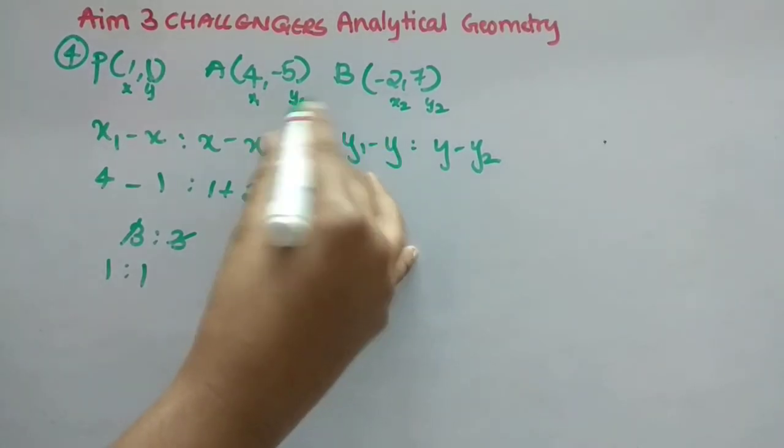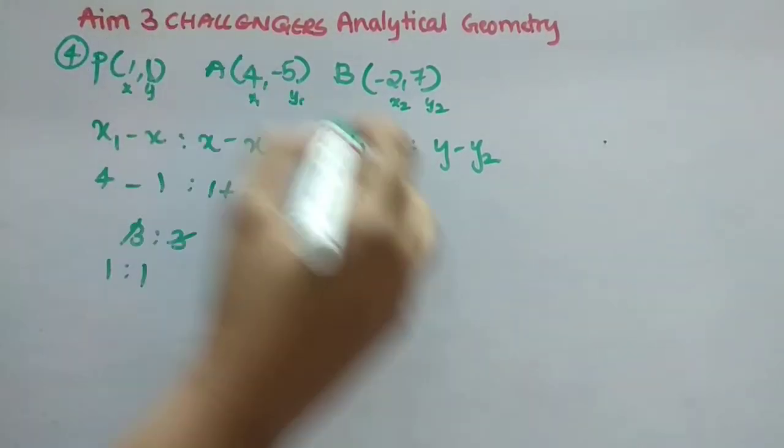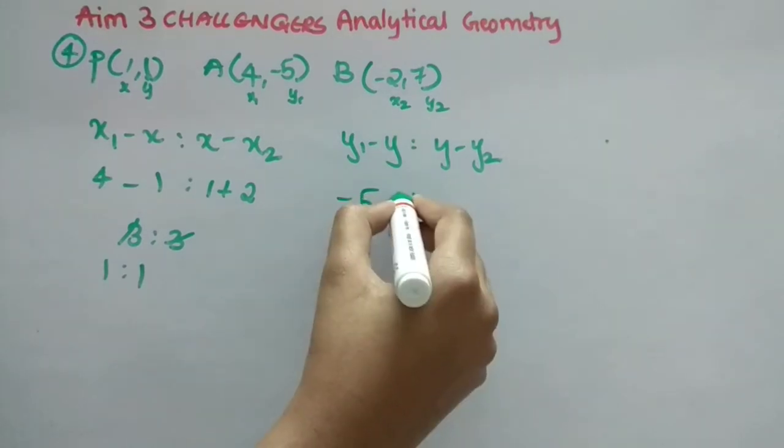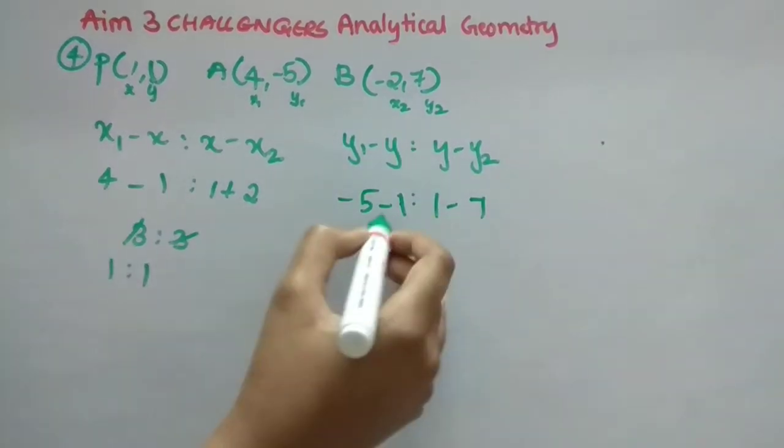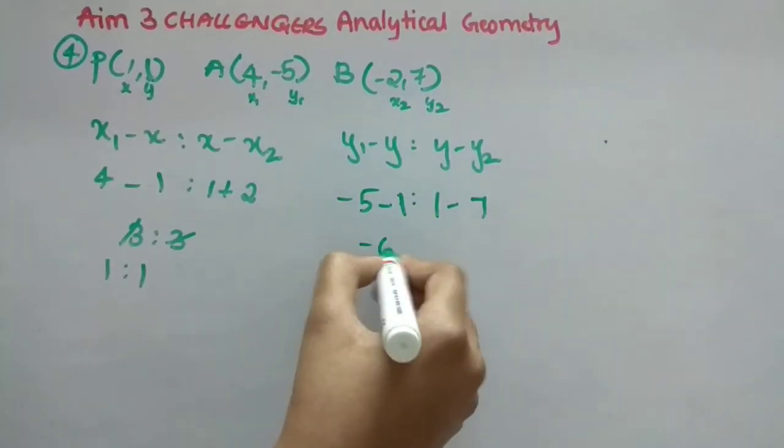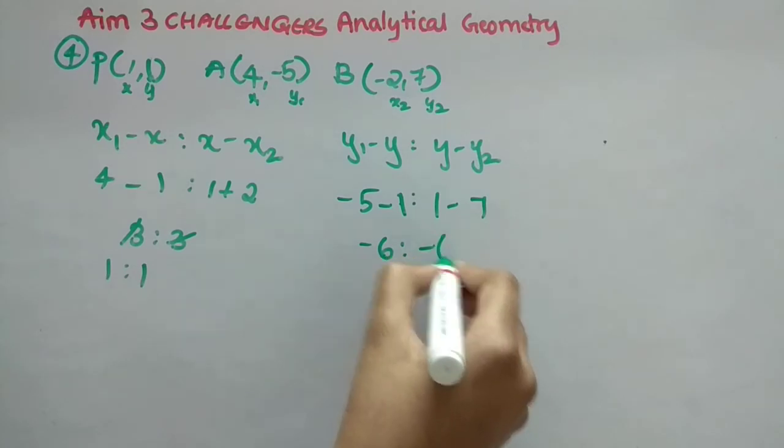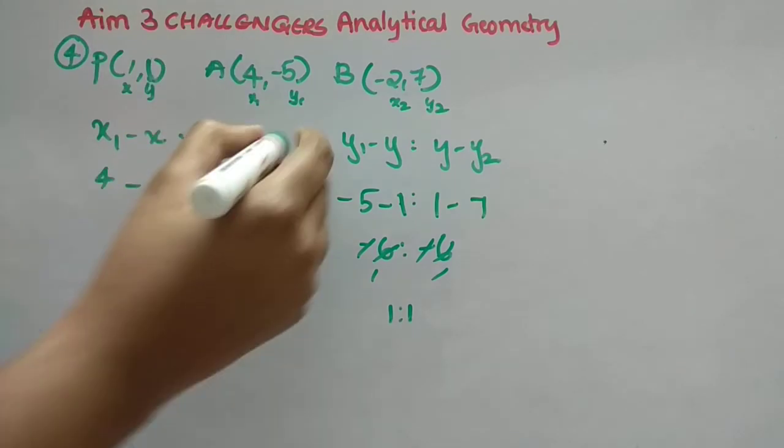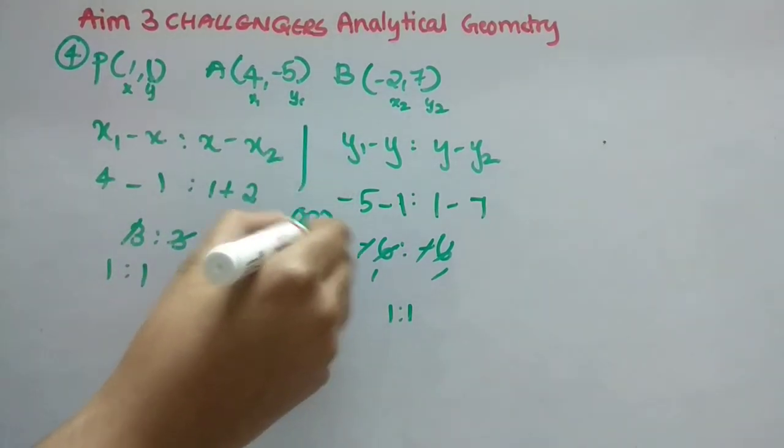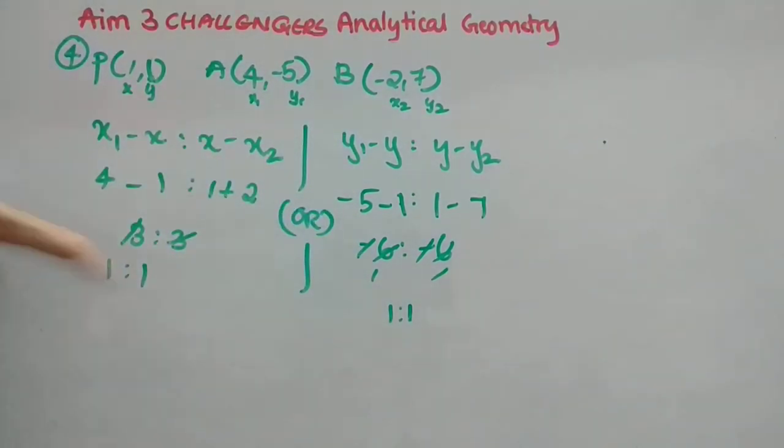And here also you will get the same answer. Let's solve it. So minus 5, y1 is minus 5, and minus y is 1 is to y is 1 minus y2 is 7. So minus 5 minus 1 is minus 6 is to 1 minus 7 is minus 6. So minus minus cancel 6 ones are 6 ones are. So 1 is to 1. Clear? Now this is only fourth one. Answer is 1 is to 1. Actually you can do it in one way also. But you will get the same answer. So you can copy either ways. Both ways if you copy, it's really good. One way if you copy also, no problem. Now we will see the last question.